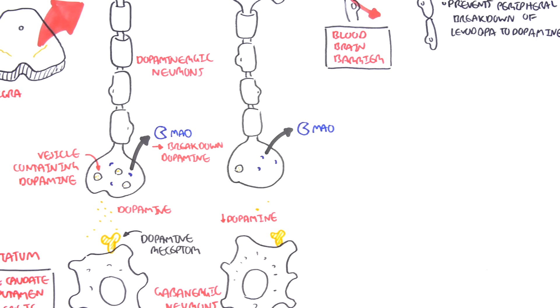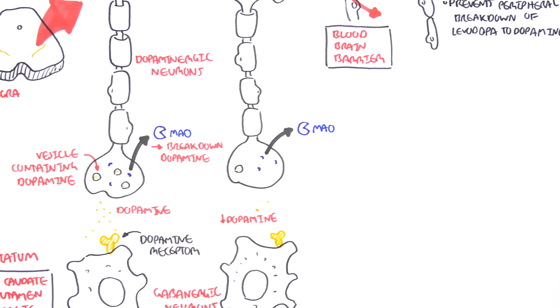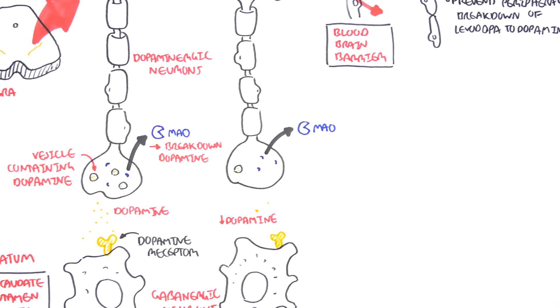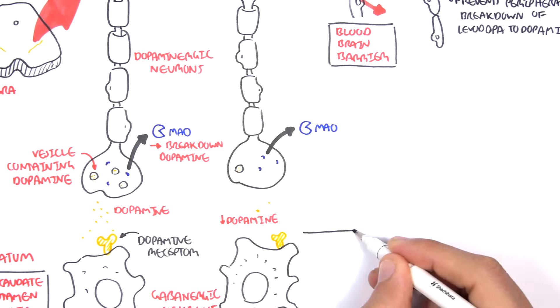Those were the drugs—levodopa is first line for Parkinson's disease. However, there are other drugs that could also be given, and they target different things.